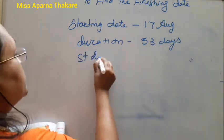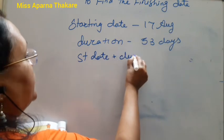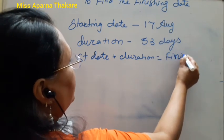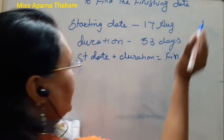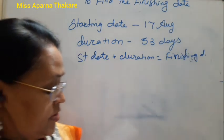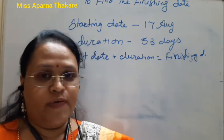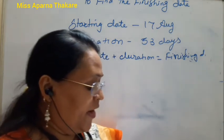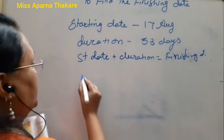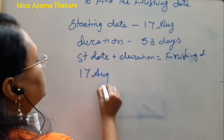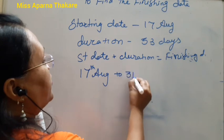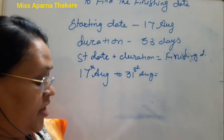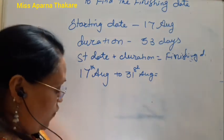To find the finishing date, we count forward — always go forward. From 17th August to 31st August: counting from 17 to 31, that is 15 days.